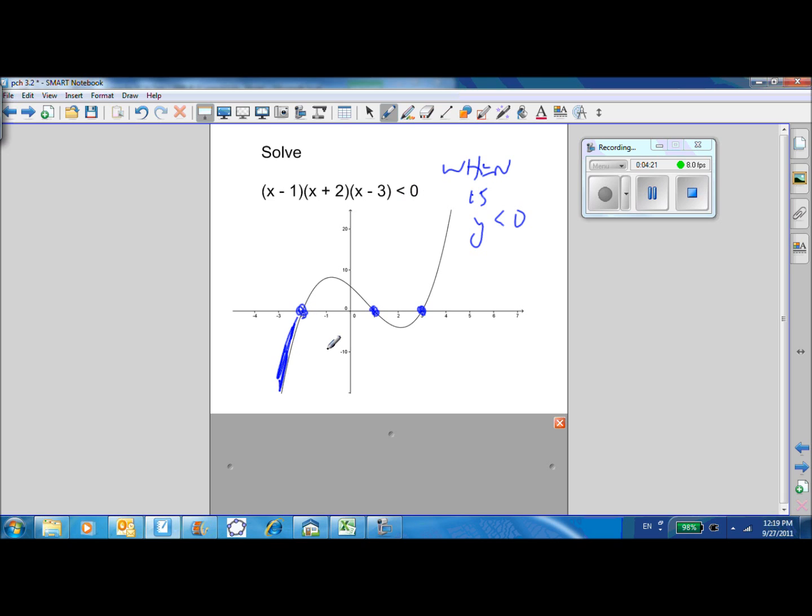And we want to know when is Y less than 0 because now we've got a less than there. So that's going to be in here and here. And that corresponds on the X-axis to these points and the points in between here. So it simply becomes X is less than negative 2 or 1 is less than X is less than 3.